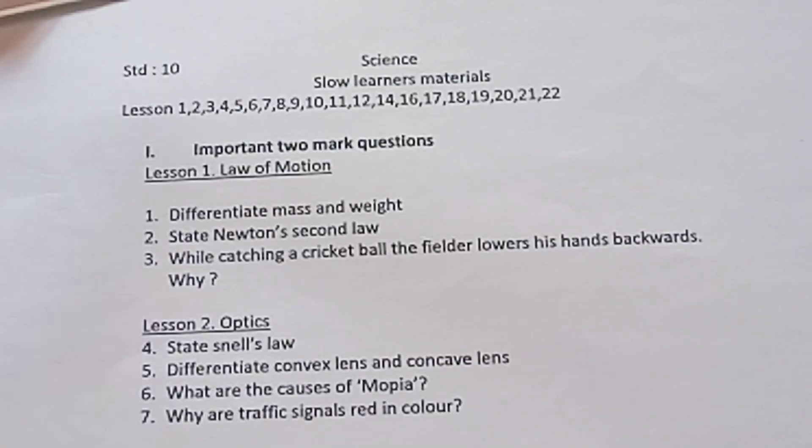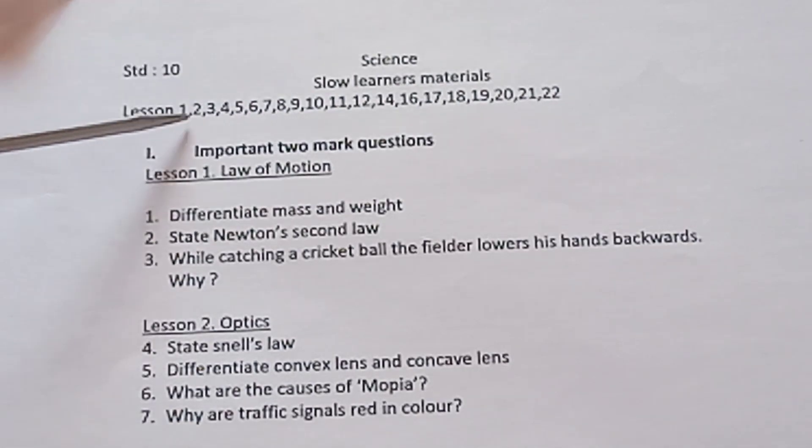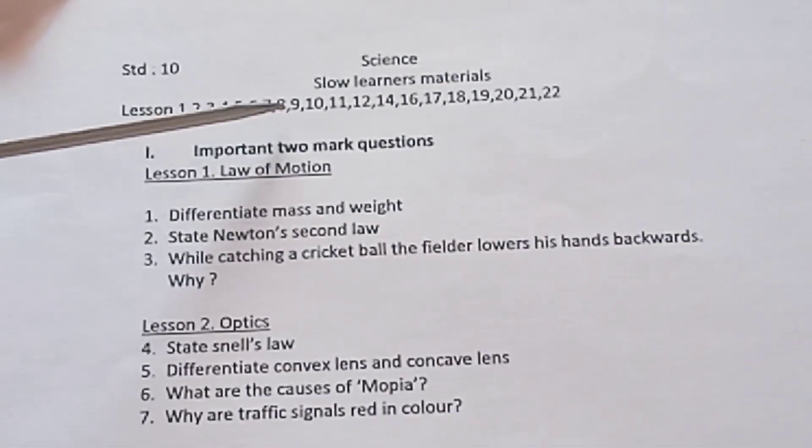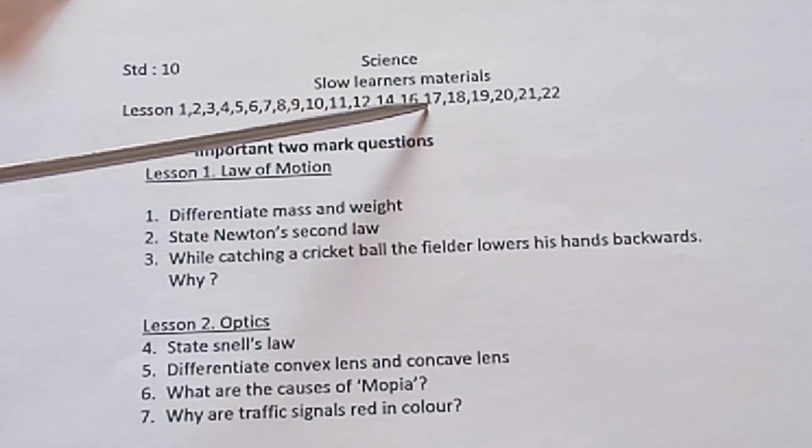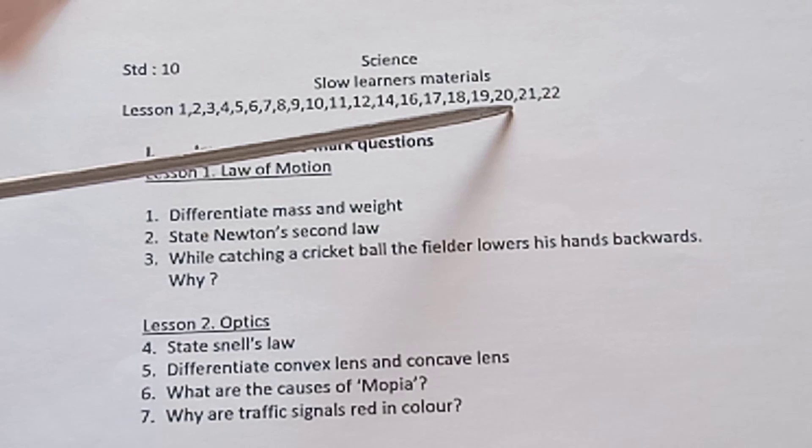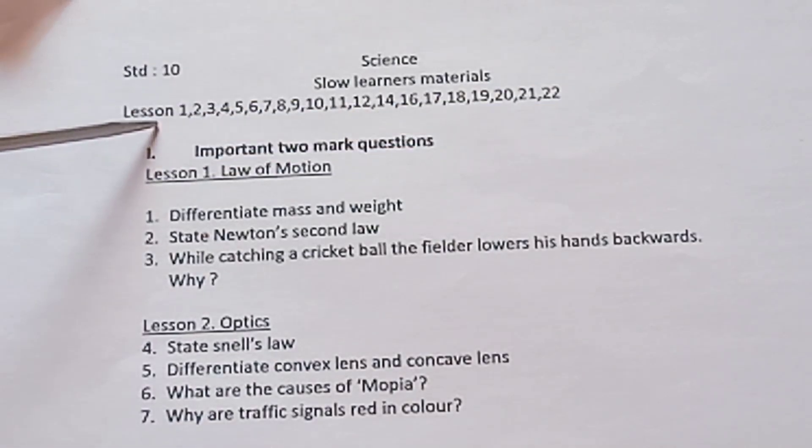Welcome to Standard 10 Science Slow Learners Materials. Portions for Public Exam: Lessons 1, 2, 3, 4, 5, 6, 7, 8, 9, 10, 12, 14, 16, 17, 18, 19, 20, 21, and 22. Overall 20 lessons.